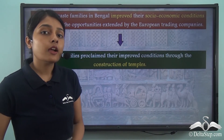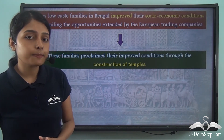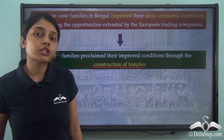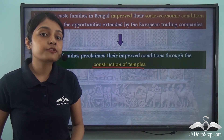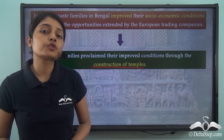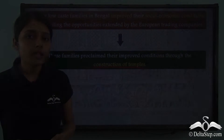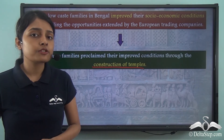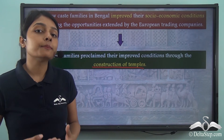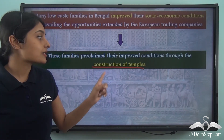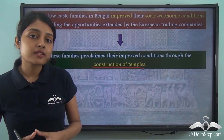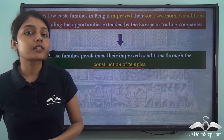Now on account of their improved conditions, these people now started the construction of temples. The construction of temples was an expression on their part to display their improved socio-economic conditions. Earlier on, most of the lower caste families were downtrodden and forced to live at the bottom of society. But now with the advent of the European trading companies, many of the lower caste families were able to improve their conditions and started the construction of temples. So this explains how the lower caste social groups amassed the wealth and resources required for the construction of new temples.